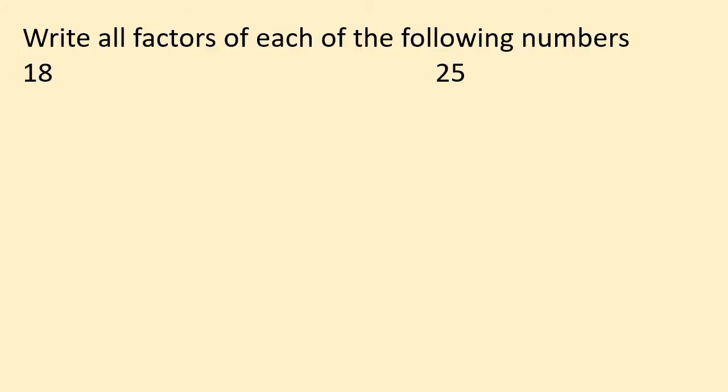The given question is: write all the factors of each of the following numbers. The first number is 18. We can find the factors of any number using multiplication. To find the factors, we write all the possible combinations of that number starting from 1 and continue till the factors start repeating. We know 1 is the smallest factor, so we write 1 multiplied by 18 equals 18. Then 18 comes in the table of 2: 2 multiplied by 9 equals 18. Then by 3: 3 multiplied by 6 equals 18. We do not get 18 in the table of 4 and 5.